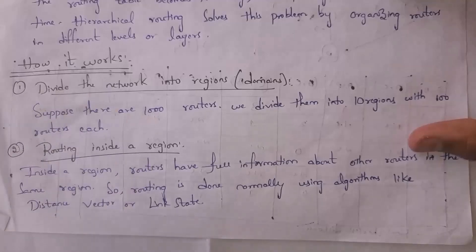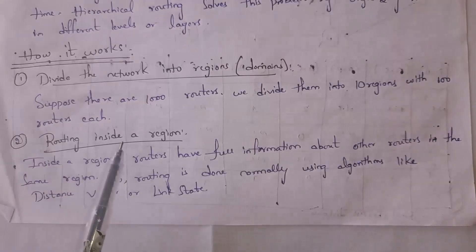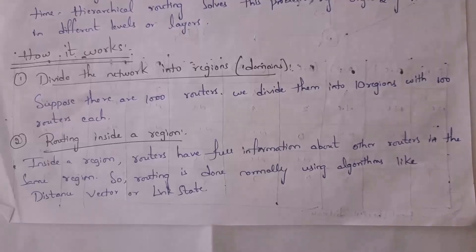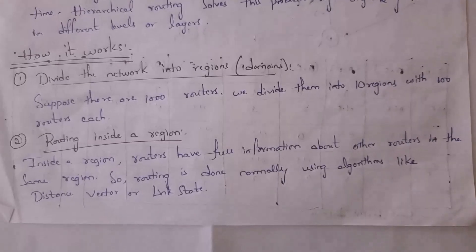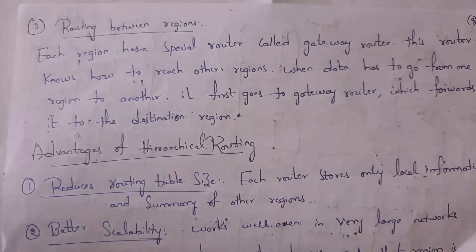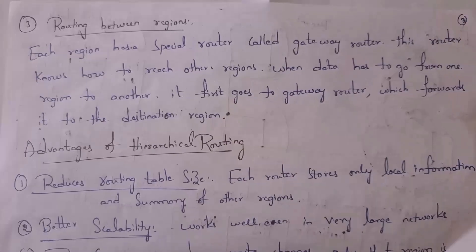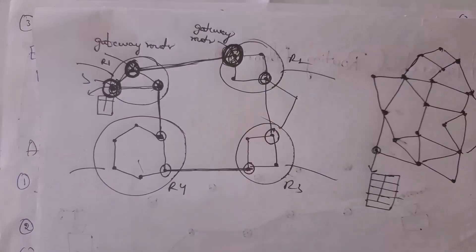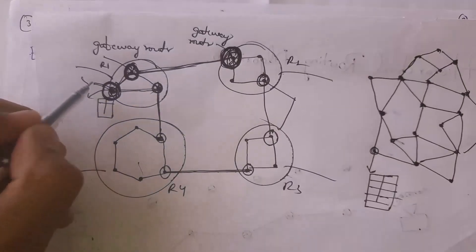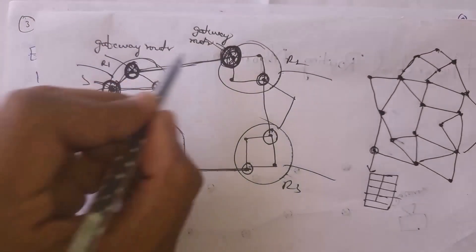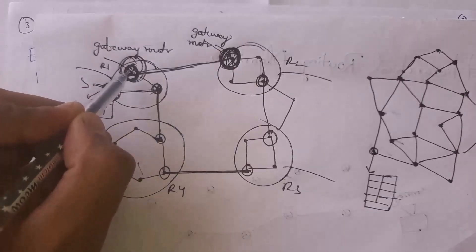One key step in hierarchical routing is dividing the entire network into smaller regions. If communication is within the region, routers can communicate directly — normally using distance vector routing or link state routing algorithms. But if a router in one region wants to communicate with a router in another region, it needs to use the special gateway router to connect them.